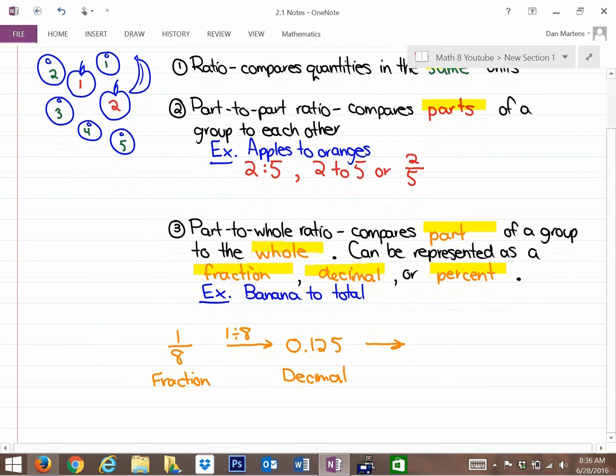And finally, if you want to make that into a percent, you simply multiply the decimal by 100, and what you will get is 12.5% of the total fruit is, or are, bananas.